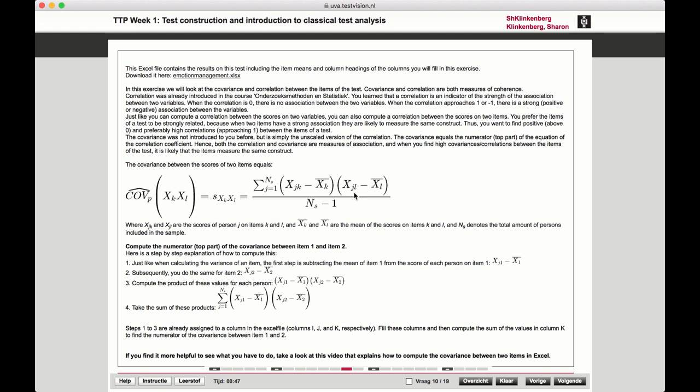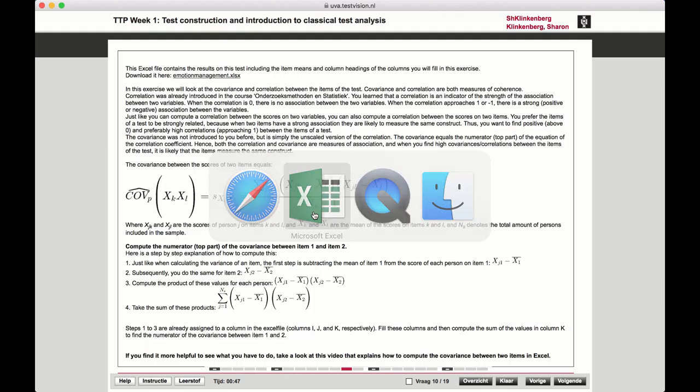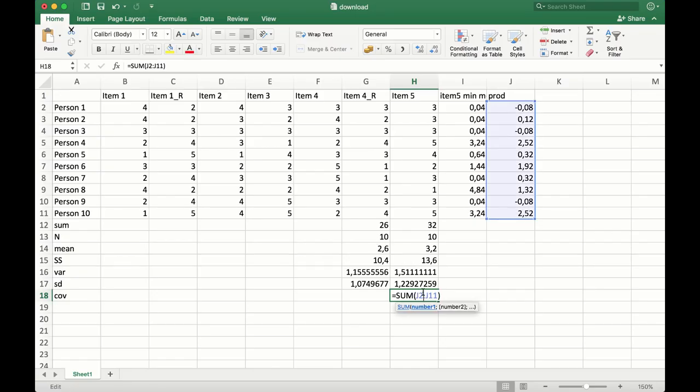The only thing left to do now is divide that by the total amount of persons minus 1. So we could just add that. Let's go there. We're going to divide it by n. Which one was n? That was here.